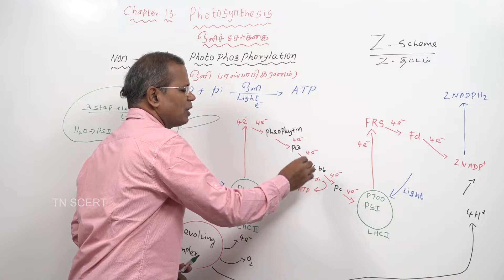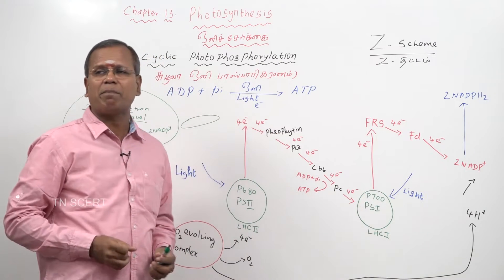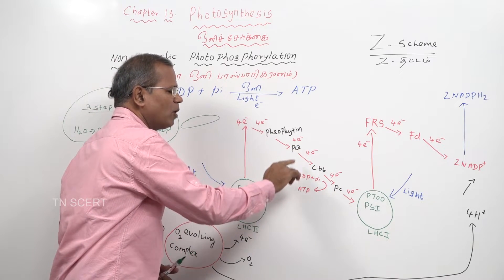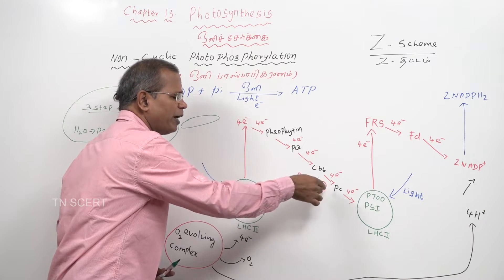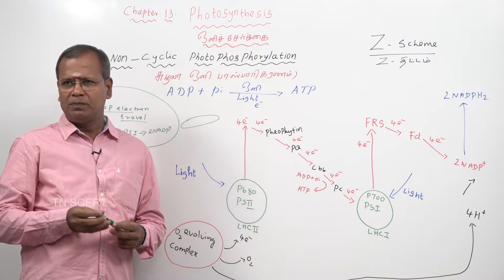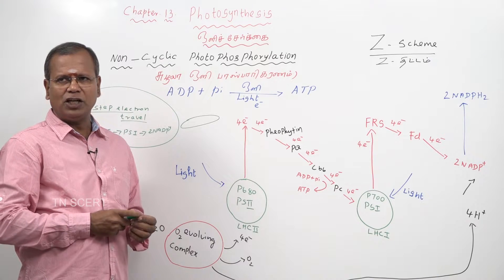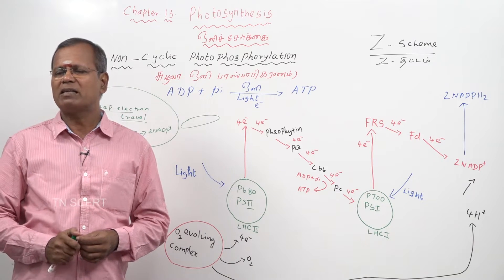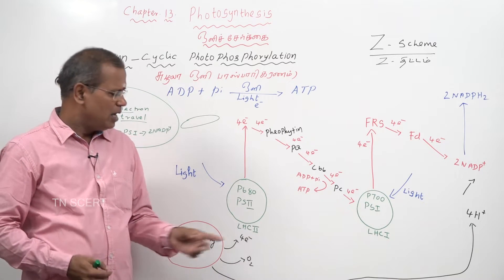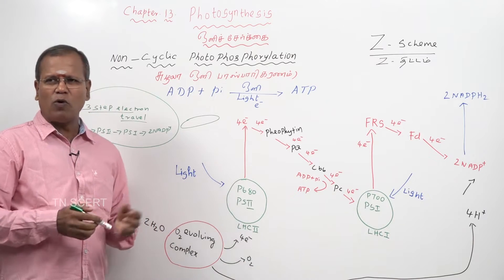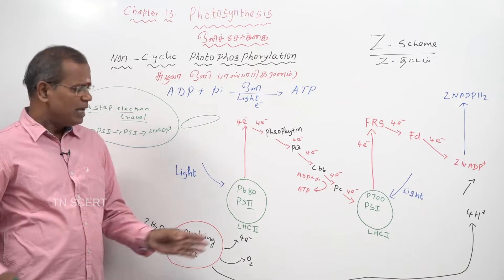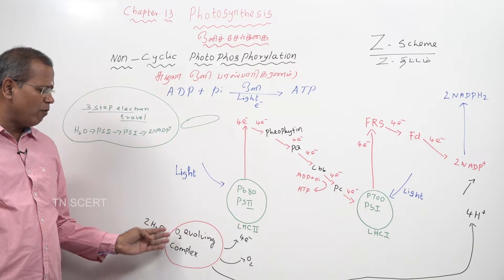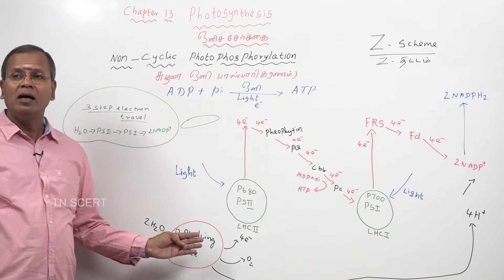The energy lost during electron travel from PS2 to PS1 is used for the conversion of adenosine diphosphate (ADP) to form adenosine triphosphate (ATP). So the loss of energy is utilized for the conversion of ADP to ATP. This phosphorylation is said to be photophosphorylation. Now PS2 is in an excited or oxidized state.